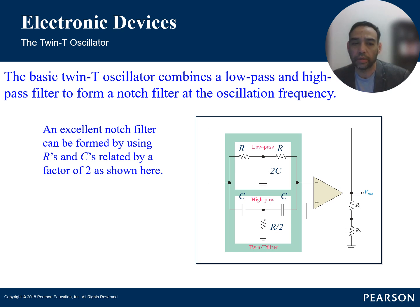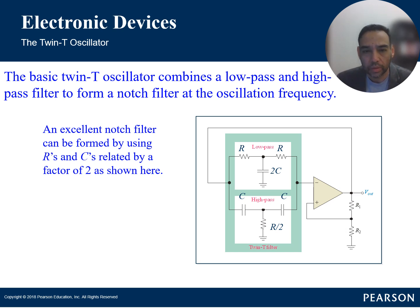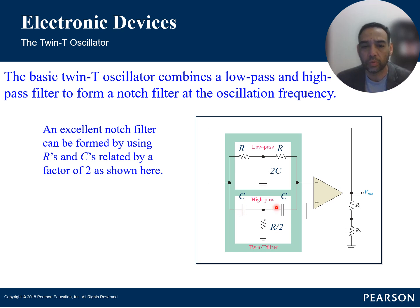An excellent notch filter can be formed by using R's and C's related by a factor of two. We have two T-shapes: one with two resistors and a capacitor, and one with two capacitors and a resistor, where R equals R and the capacitance on one side is two times the capacitance on the other side.